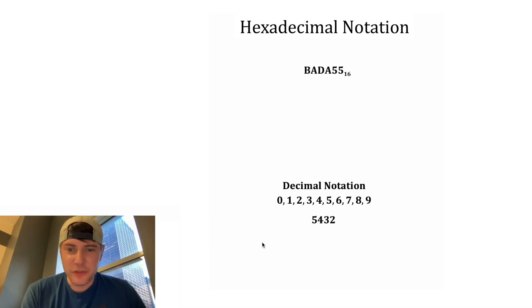And the way the decimal notation works, if we have something like 5, 4, 3, 2, each of these digits gets split up. The first digit is multiplied by 10 to the 0. The second digit is multiplied by 10 to the 1. The third digit is multiplied by 10 to the 2. And the last one is multiplied by 10 to the 3. And then we add them all together. And this is how we get our 5,432.